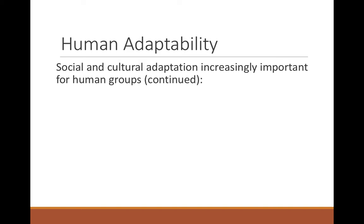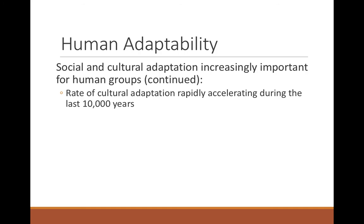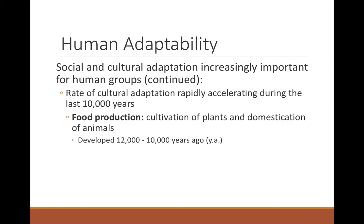Social and cultural adaptation has become increasingly important for human groups over time. The rate of cultural adaptation has rapidly accelerated over the last 10,000 years — when the advent of food production occurred. The cultivation of plants and domestication of animals developed around 12,000 to 10,000 years ago. This dramatically changed the human diet and also dramatically increased human population density.